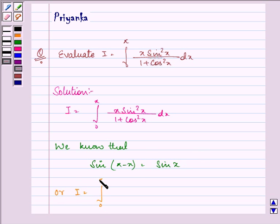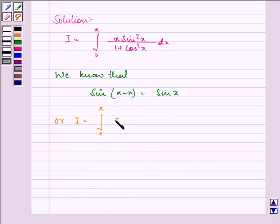So we have I equal to integral from 0 to π of (π-x) sin(π-x) over 1 plus cos²(π-x) dx.